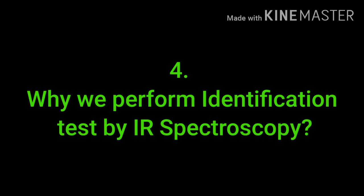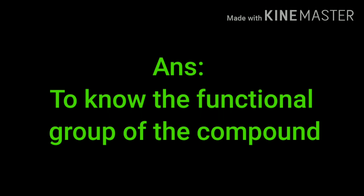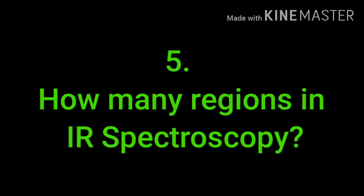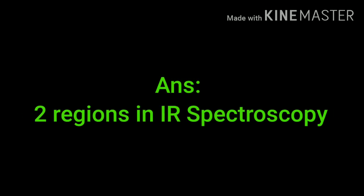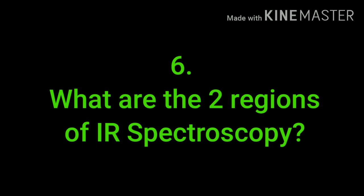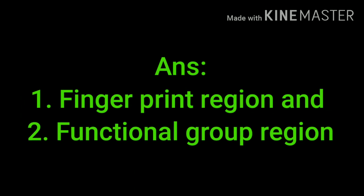Why do we perform the identification test in IR? The answer is: to know the functional group of the compound, we perform the identification test. How many regions are there in IR spectroscopy? There are two regions: the first is the fingerprint region and the other is the functional group region.